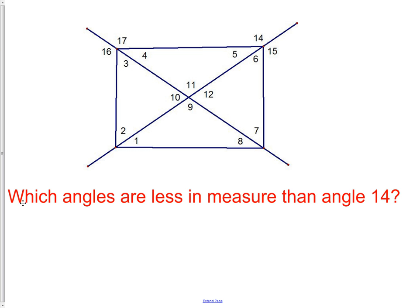Let's answer a question here. Which angles are less than angle 14? So which angles are smaller than angle 14? As we look at the picture, we need to use things like the Triangle Inequality Theorem. We know that 14, the angle I circled here, has to be bigger than angles 4 and 11. That has to be true for sure because of the exterior angle inequality theorem.